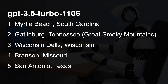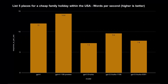GPT 3.5 Turbo just lists the places with no description and no introductory paragraph. Looking at words per second: GPT 4 outputs about 12 words per second, GPT 4 Turbo about 14 words per second — so it is genuinely faster in that sense, it is turbo. The GPT 3.5 models come in around 7–9 words per second. GPT 3.5 Turbo 1106 can even go a bit higher depending on server load, and it has the fastest response rate among the GPT 3 family.